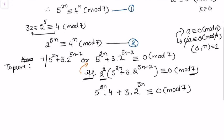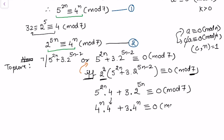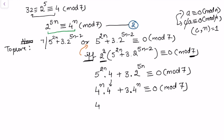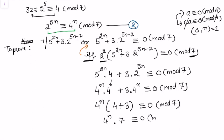Now I apply Congruences 1 and 2. From Congruence 1, 5 to the power 2n is 4 to the power n, so replace it with 4 to the power n, and we still have one more factor of 4. From Congruence 2, 2 to the power 5n is 4 to the power n, so replace that as well. This gives 4 to the power n times 4 plus 3 times 4 to the power n congruent to 0 modulo 7. Taking out 4 to the power n, inside we have 4 plus 3, which equals 7.